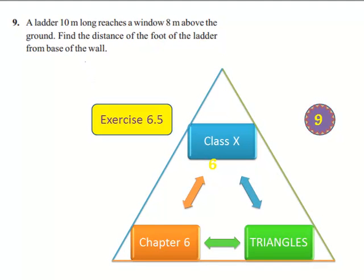Moving on to the 9th sum, a ladder 10 meters long reaches a window 8 meters above the ground. Find the distance of the foot of the ladder from the base of the wall.